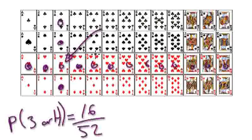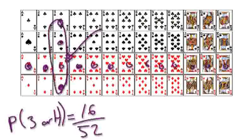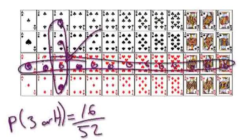All the probabilities in the videos before this were what's called mutually exclusive. But this here has an overlap, so this is not mutually exclusive.